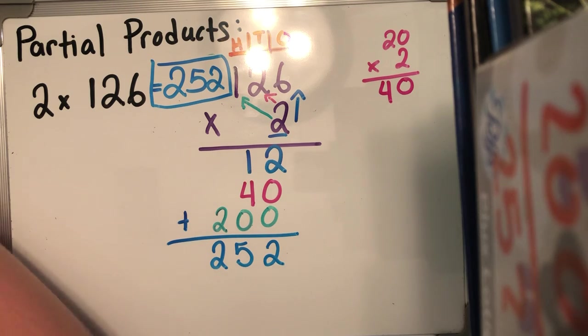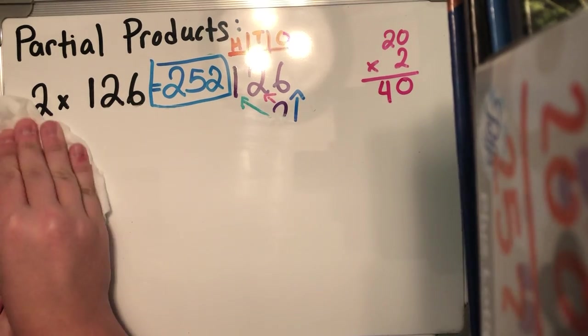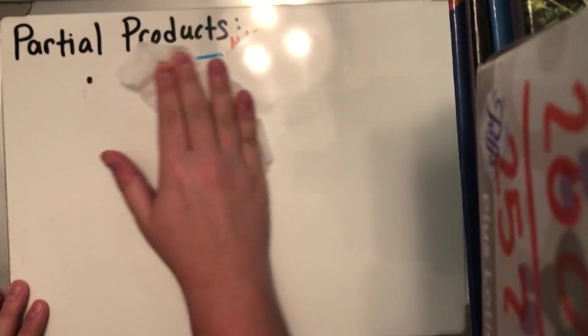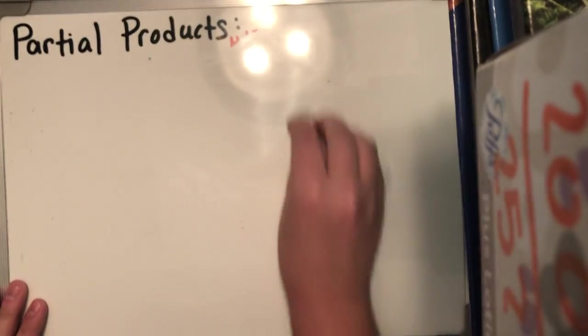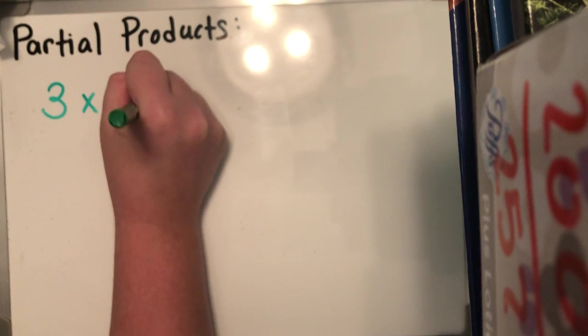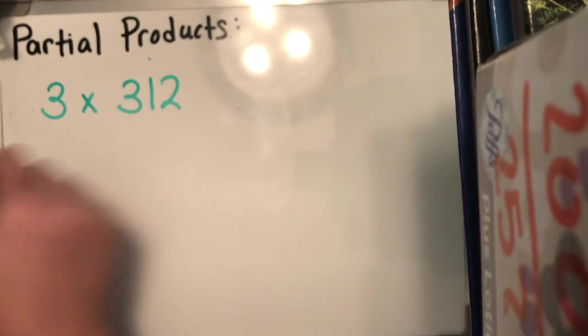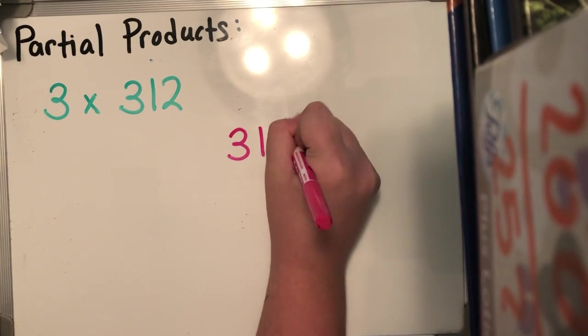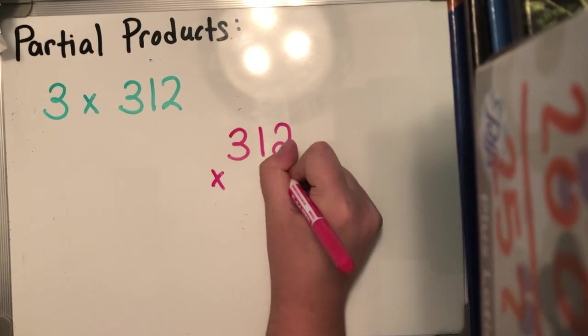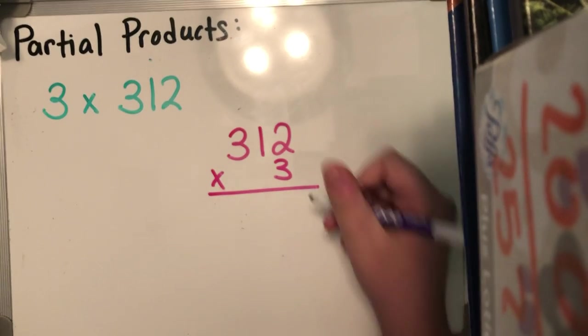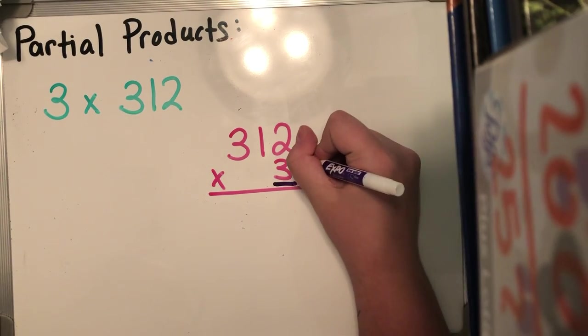All right, we're gonna keep moving forward. We're gonna do another practice problem, and we're gonna do some partial products with double digit multiplication as well. So my next problem is gonna be three times 312. I'm gonna go ahead and write it the correct way so that I'm able to do it properly.